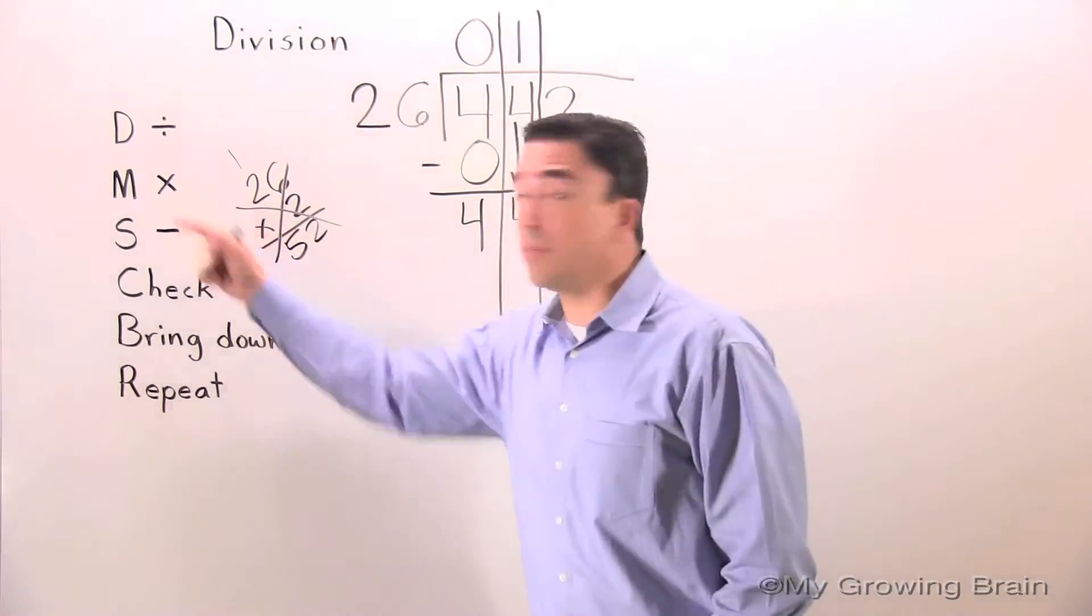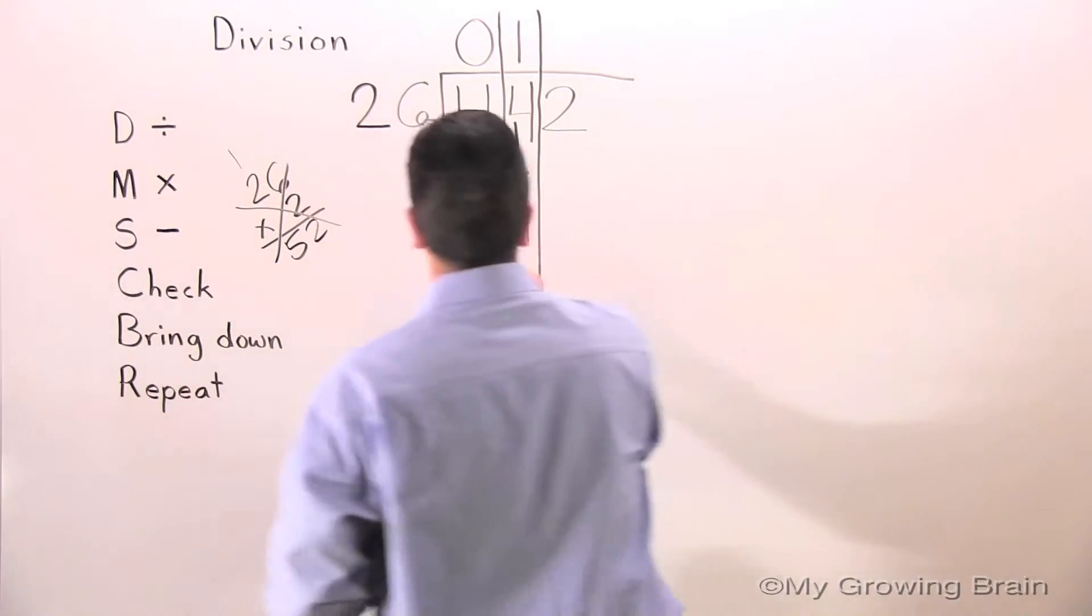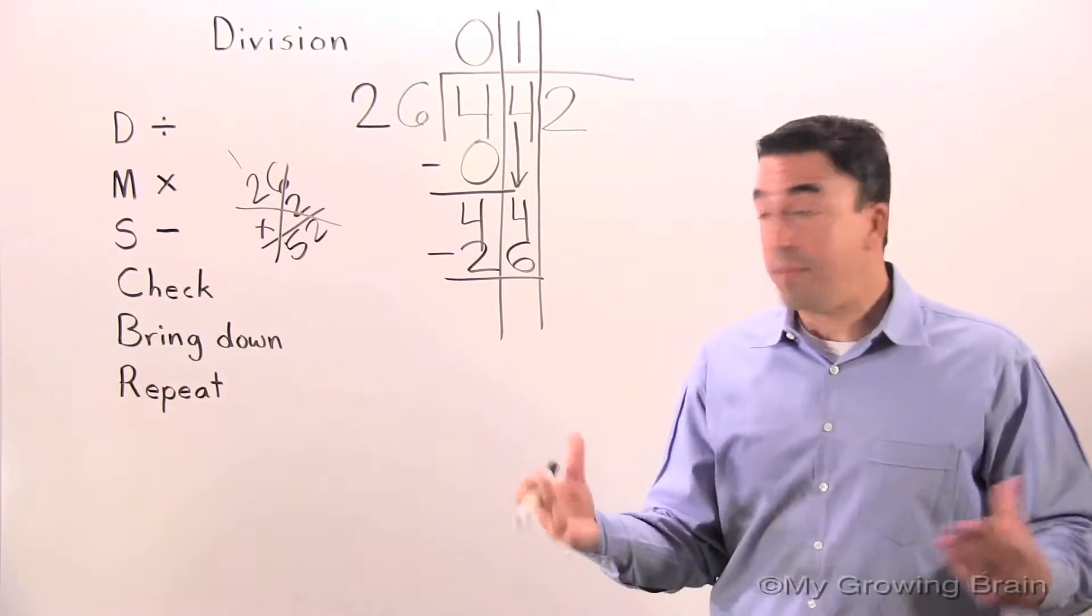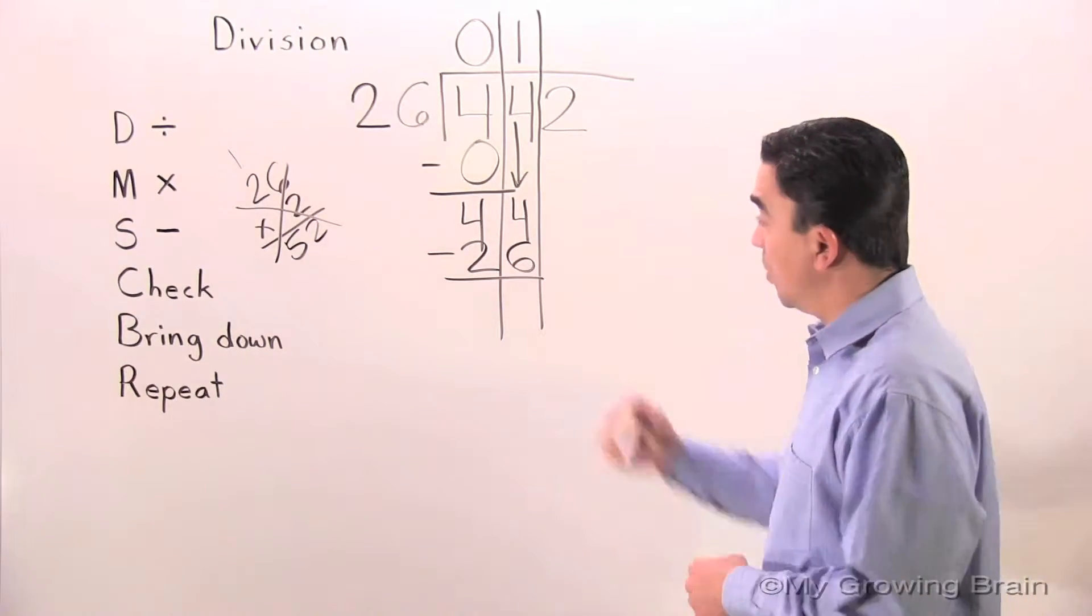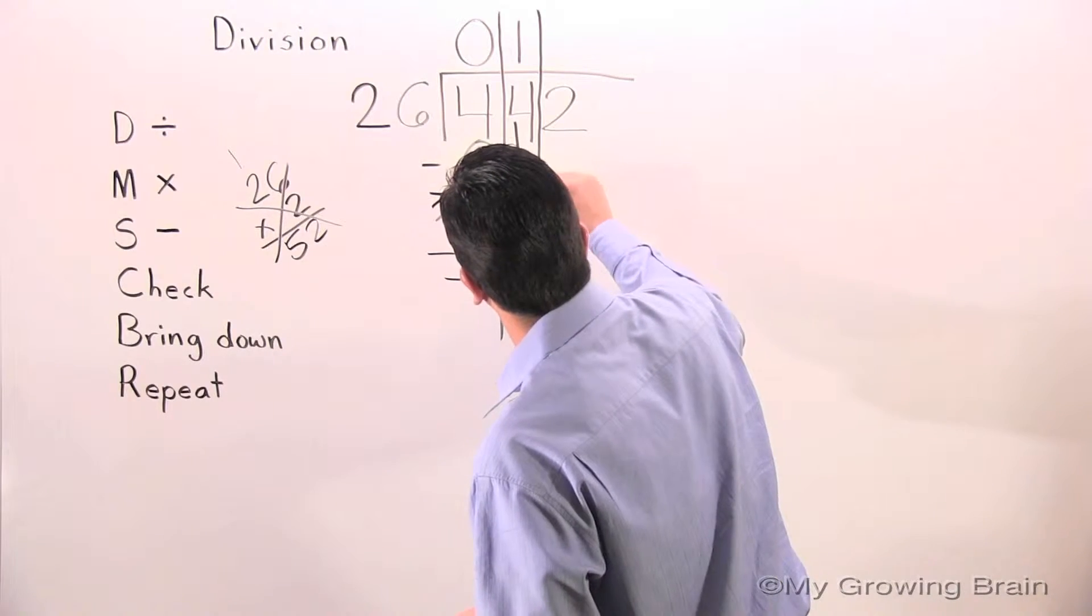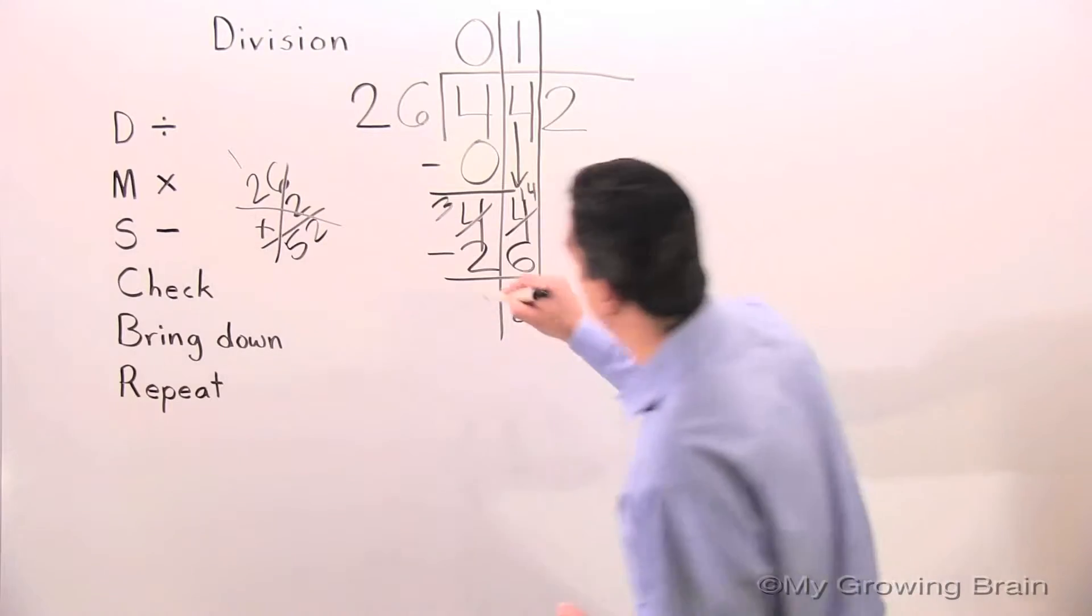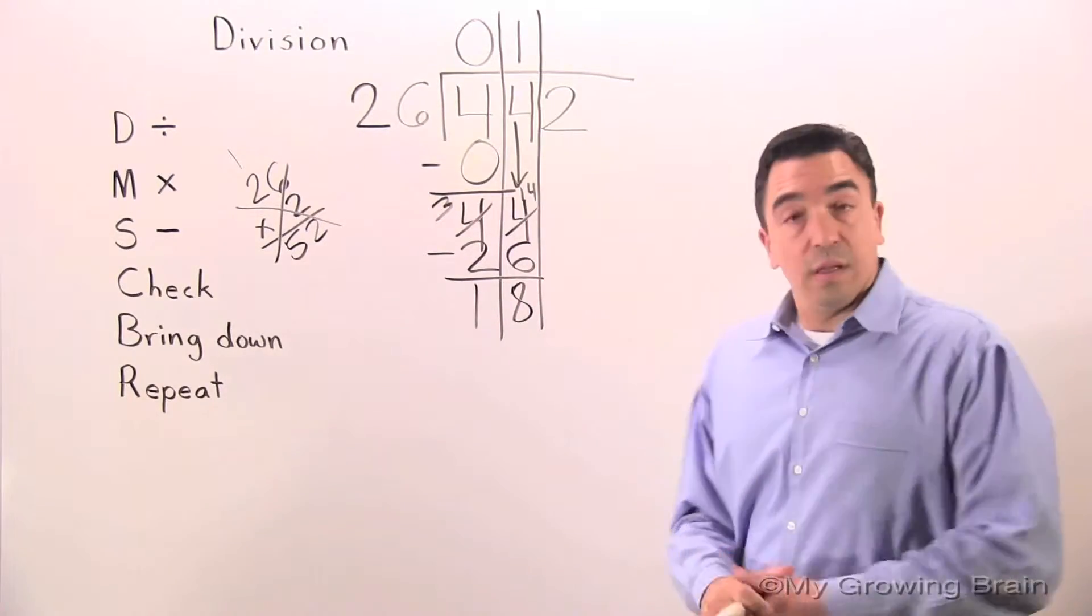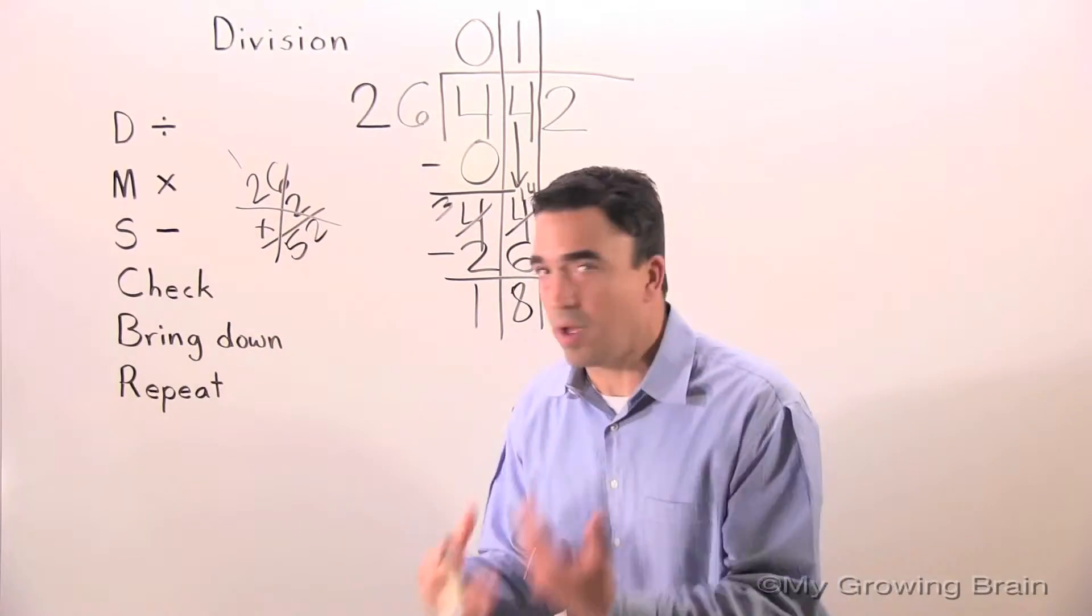Next step. Multiply. 26 times 1. 26. Next step. Subtract. 44 minus 26. Well, I can't do it, so I'm going to have to regroup. 14 minus 6. 8. 3 minus 2. 1. Next step. Check. 18 is less than 26. Keep on going.